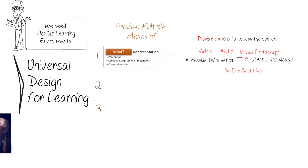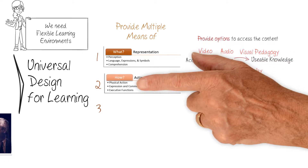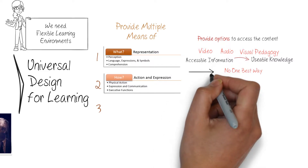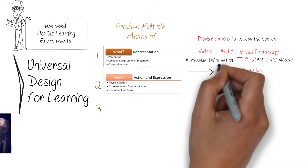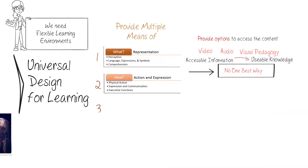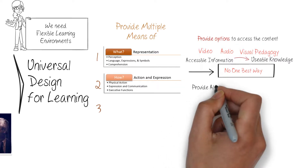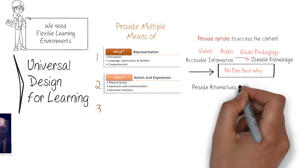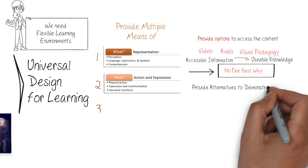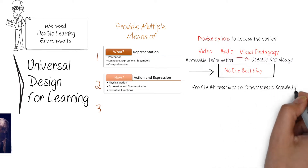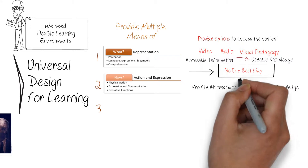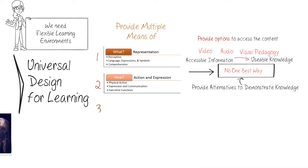Principle 2: Provide multiple means for action and expression. Learners differ in the ways they can navigate a learning environment and express what they know. Effective learning environments provide learners with alternatives for demonstrating what they know. There is never one means of expression that is optimal for all learners — some may like oral discussion while others prefer writing papers. Providing options for action is essential for promoting learning for everyone.